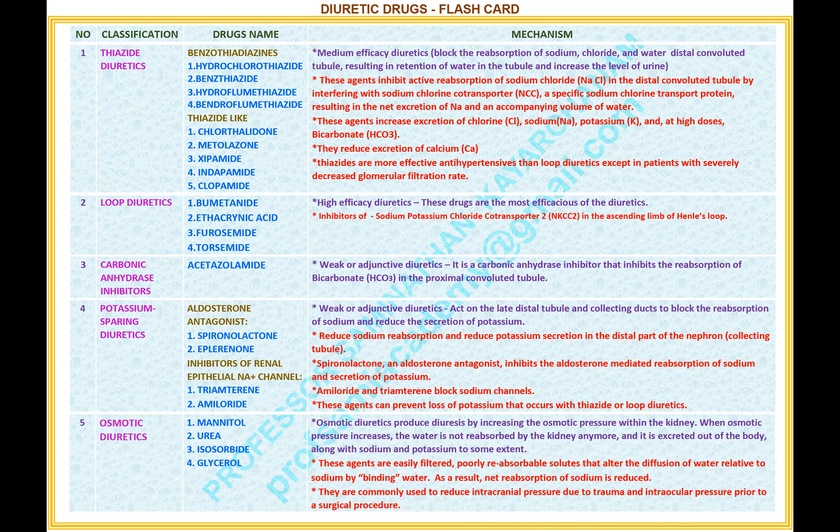Number 5. Name of the classification: osmotic diuretics. Drugs name under this classification: 1. Mannitol, 2. Urea, 3. Isosorbide, 4. Glycerol. Mechanism of osmotic diuretics: osmotic diuretics produce diuresis by increasing the osmotic pressure within the kidney. When osmotic pressure increases, water is not reabsorbed by the kidney anymore and it is excreted out of the body, along with sodium and potassium to some extent. A detailed explanation: these agents are easily filtered, poorly reabsorbable solutes that alter the diffusion of water relative to sodium by binding water. As a result, the net reabsorption of sodium is reduced. They are commonly used to reduce intracranial pressure due to trauma and intraocular pressure prior to a surgical procedure.